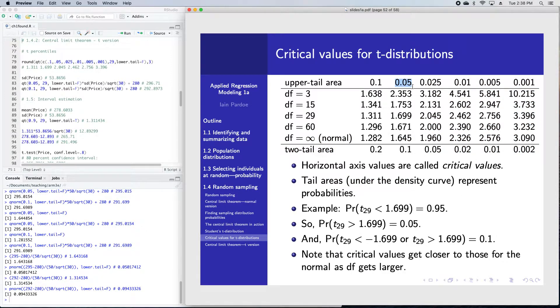If the upper tail area is 0.05, the area to the left would be 0.95. We've got the upper tail area in this statement. Two tail areas are along the bottom. If I look at 1.699 and think about the probability to the right of 1.699 and to the left of minus 1.699 and add those two tails together, I would get 0.1.